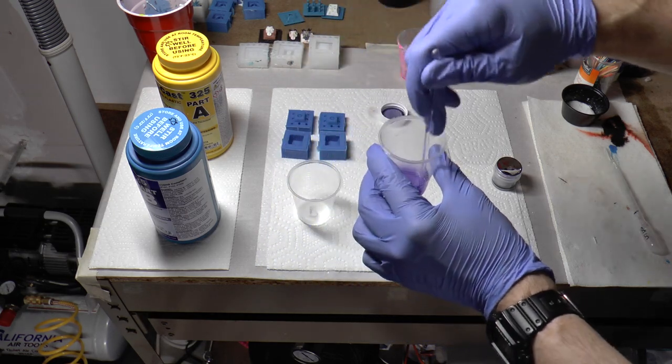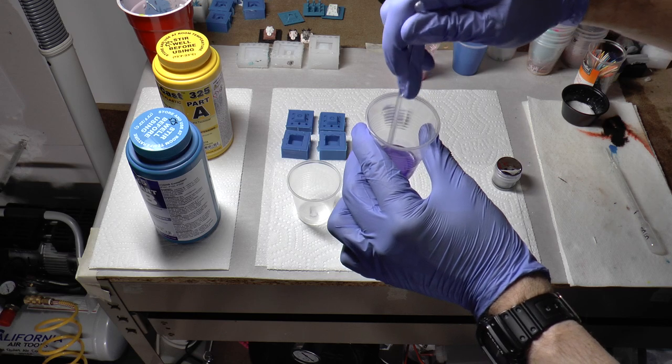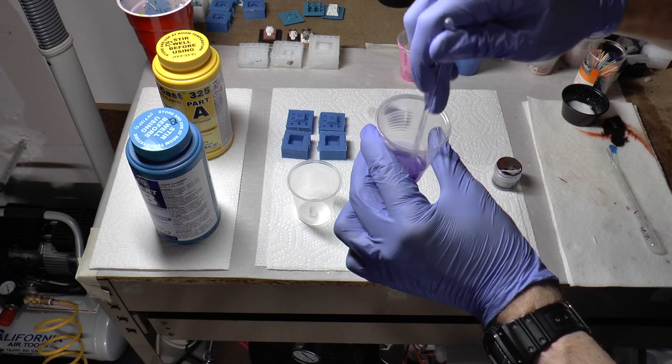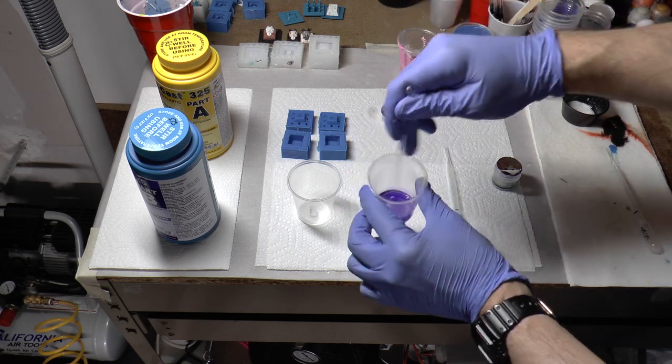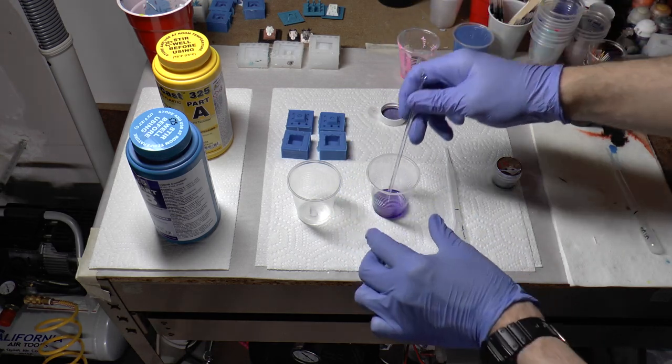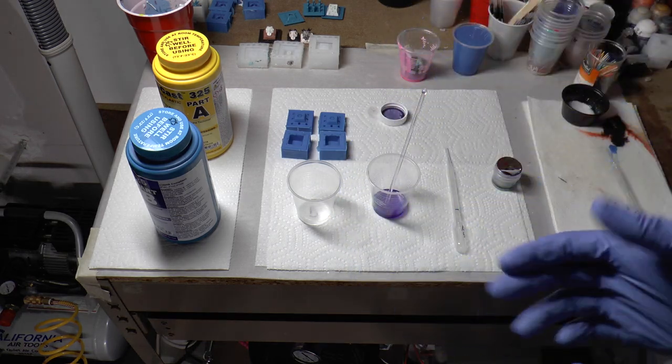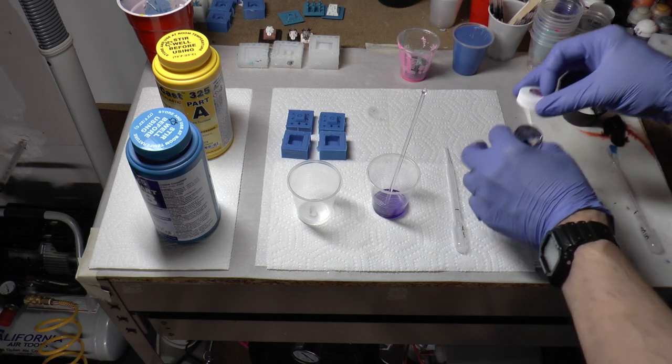Now, if you were to use something like smoothcast 300 that turns white, then you would need more. So I'm mixing that up just a little bit. I'm going to mix up the rest once it goes in on the other side too. So we have that done. And so your Part B is colored.